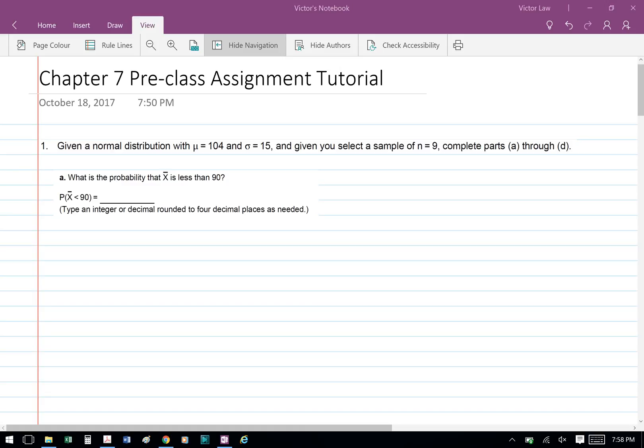Business Stats Chapter 7 Preclass Assignment Tutorial Question 1. Given a normal distribution with population mean equals 104 and standard deviation equals 15, and given you select a sample of n equals 9, complete Part A through Part D.